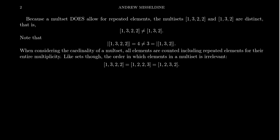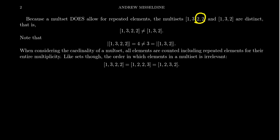Much like a set, the order in which you list the elements does not matter. But unlike a set, the number of times you list the element does make a difference. Consider the multi-sets [1, 3, 2, 2] and [1, 3, 2]. These are actually considered distinct multi-sets. Because when you look at the element 2, the multiplicity of 2 in the first one is 2, but the multiplicity of 2 in the second one is 1. Because 2 shows up with a different multiplicity in the first multi-set compared to the second, we consider those separate multi-sets.